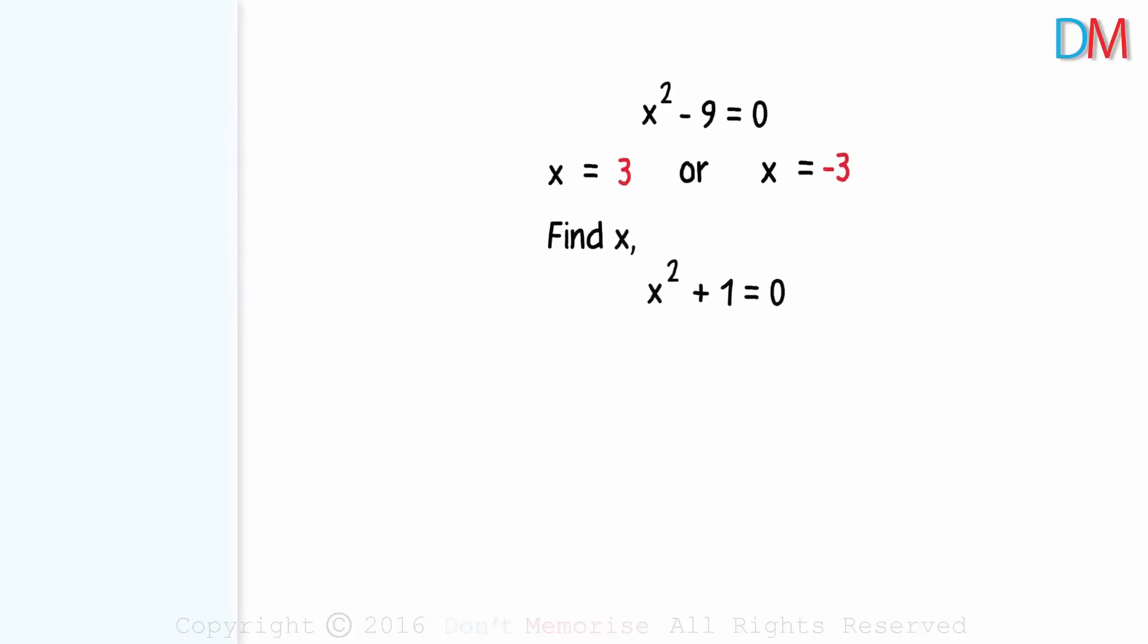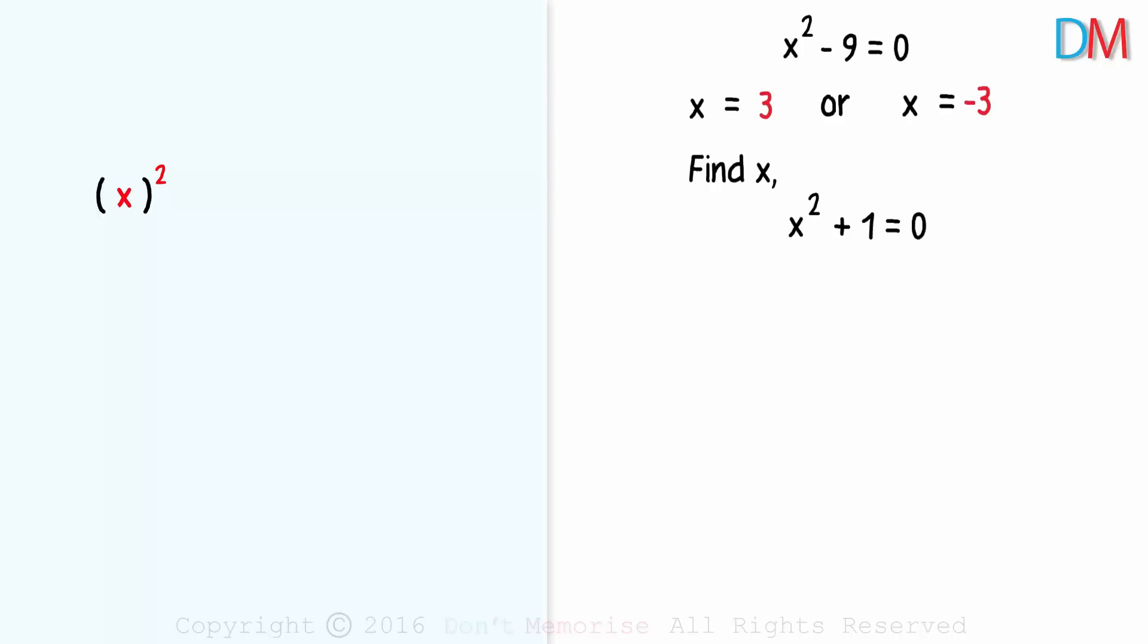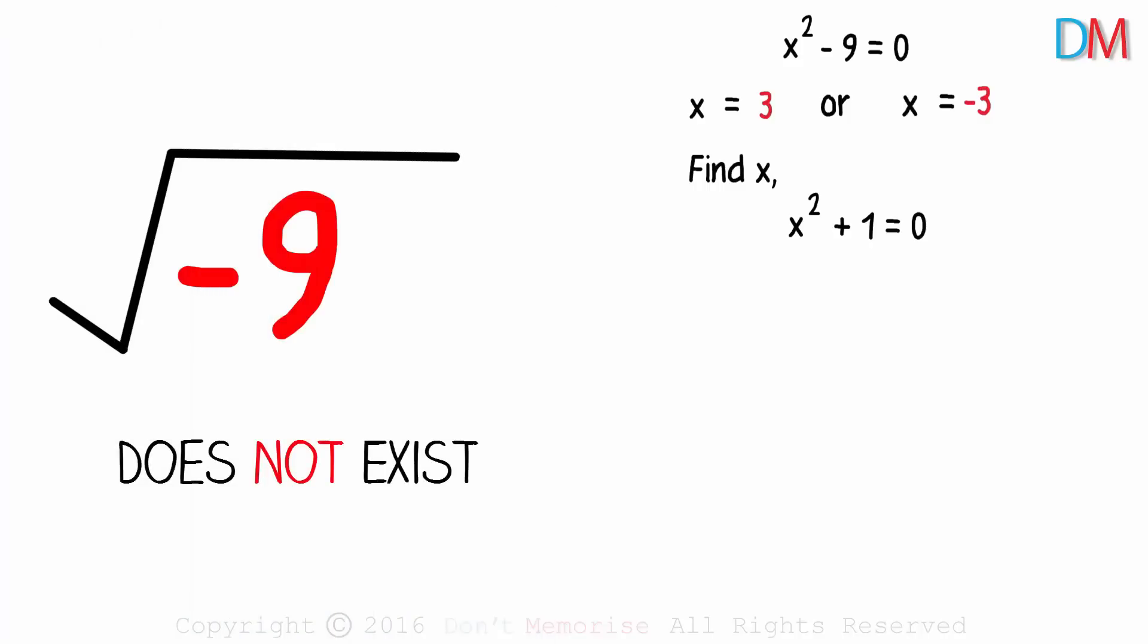Let's understand the situation now. Whenever we considered the square of a number, say x, the result was always positive whether the number x was a positive real number or a negative one. We always got a positive result. And we had learnt that a negative number did not have a square root. So if we had a number like negative 9, we said that its square root did not exist.